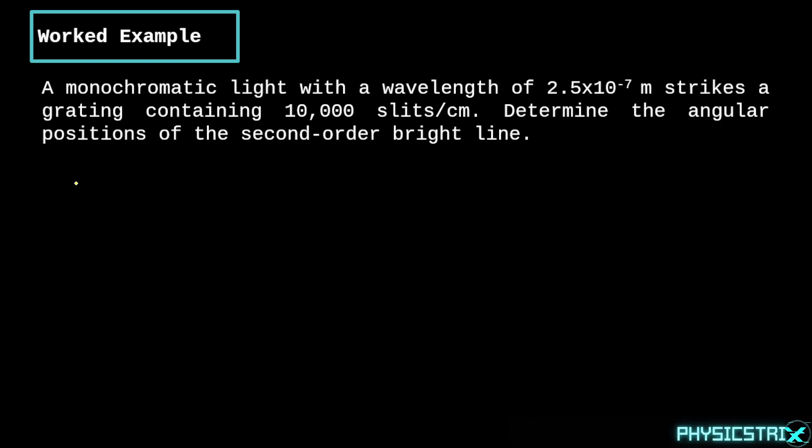There's quite a lot of information. Let's write that down. I have my wavelength to be 2.5 times 10^-7 meters. I have containing 10,000 slits per centimeter. So slits per unit length. I have my slit density or line density, which is 10,000 slits per unit centimeter. And I have my second order bright line, so small n equals to 2. What equations do I know? I know d equals to 1/n as we just discussed. And then I have d sine theta equals to n lambda.